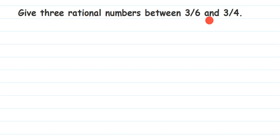When solving this type of question, the very first step is to check whether the denominators are the same or not. If they are the same, you can proceed to the second step. If not, you have to make them the same. Here we have 6 and 4, so obviously they are not the same — we are going to make them the same by taking the LCM.